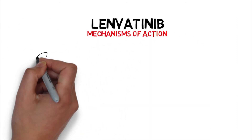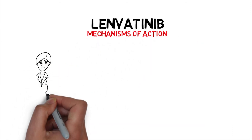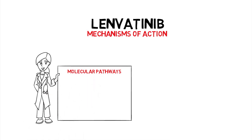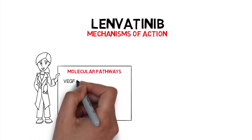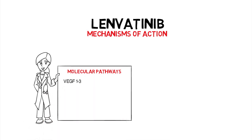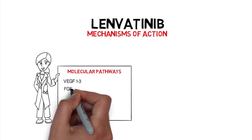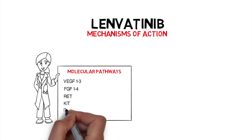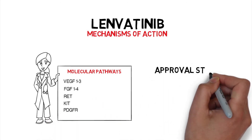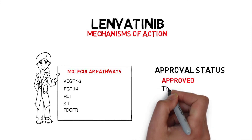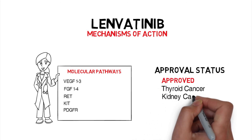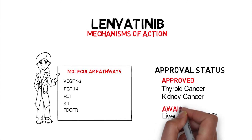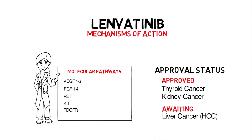Lenvatinib, like sorafenib, is an oral multi-targeted receptor tyrosine kinase inhibitor that targets the VEGF receptors 1 through 3, as well as the fibroblast growth factor receptors 1 through 4, RET, KIT, and PDGFR. This drug is already approved for thyroid cancer and for the treatment of kidney cancer, and its approval for the treatment of liver cancer is awaited.